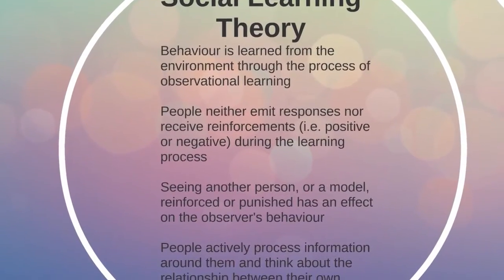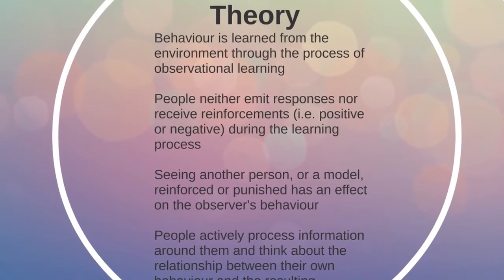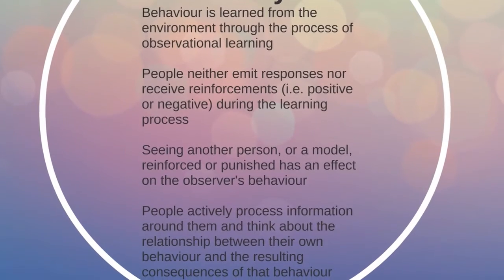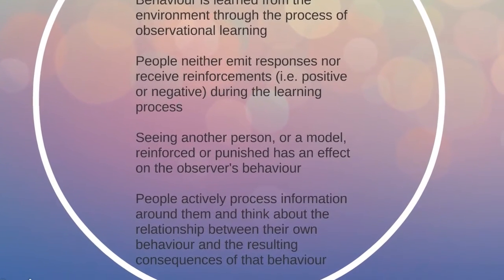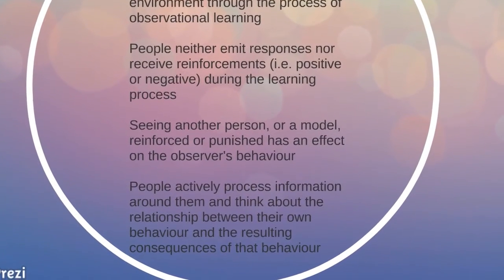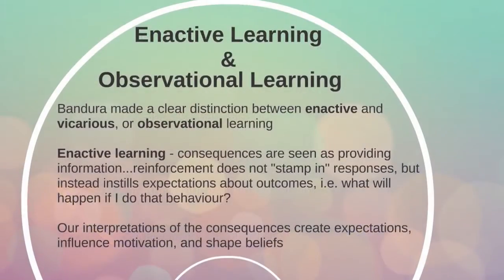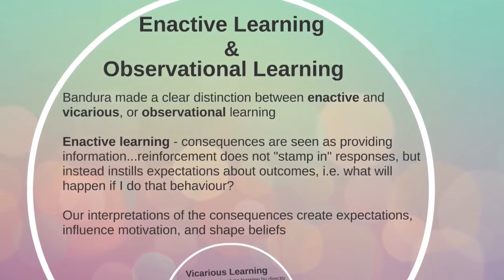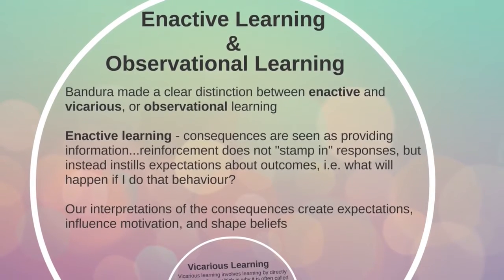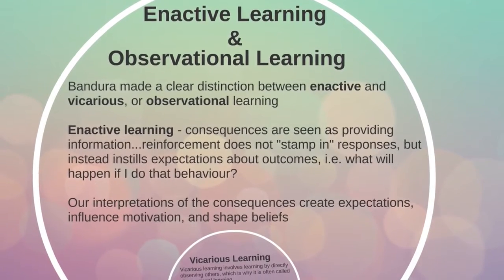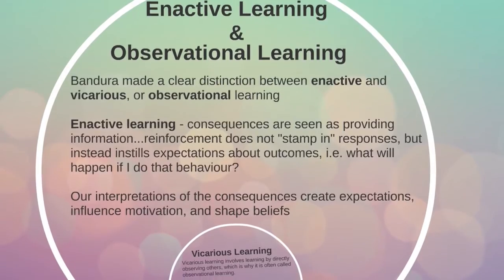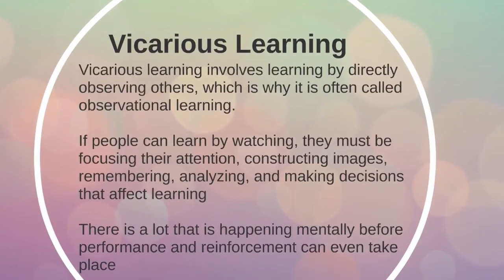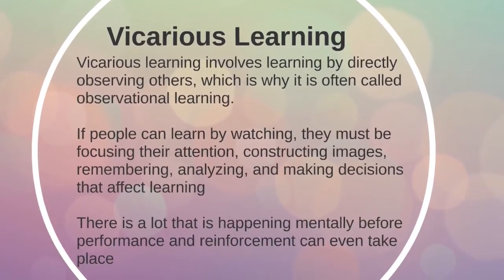In Bandura's social learning theory, behavior is learned from the environment through a process of observational learning. People actively process information around them and think about the relationship between their own behavior and the resulting consequences. Bandura made a clear distinction between inactive learning and observational learning. With inactive learning, interpretation of consequences are seen as providing information. Observational learning, or vicarious learning, is learning by directly observing others.